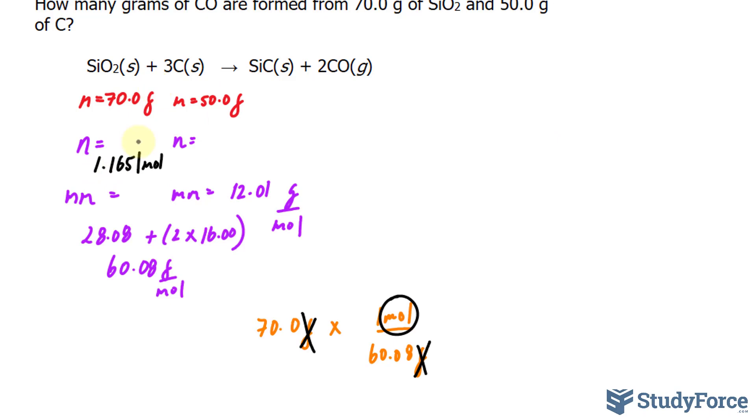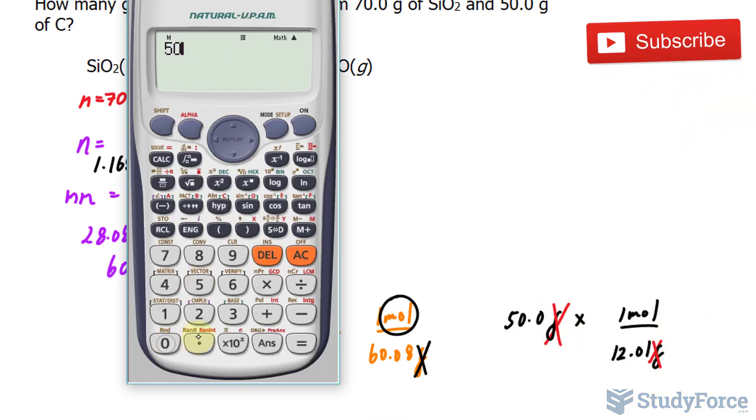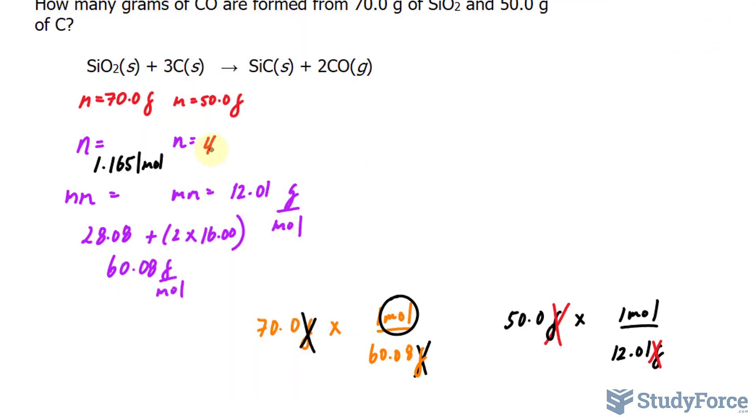And we need this to be significant figures, although I don't want to round just yet. So I'll keep a few extra digits. Let's do the same thing for carbon. We'll take 50.0 grams and multiply it by its molar mass, where we have 1 mole at the top and at the bottom 12.01 grams. That will cancel out. 50.0 divided by 12.01, and we get 4.1631.